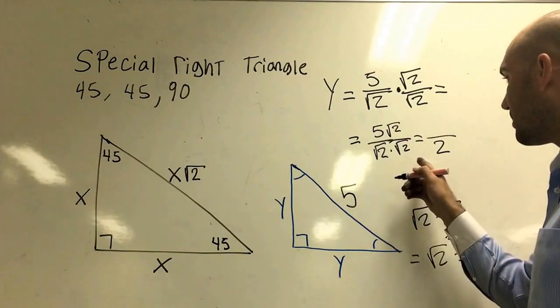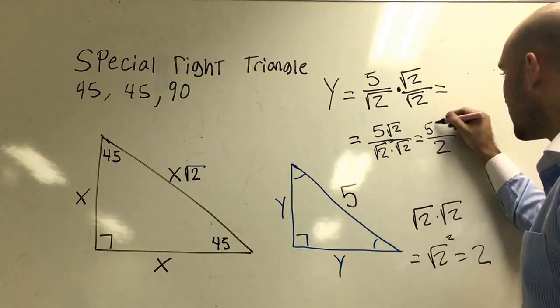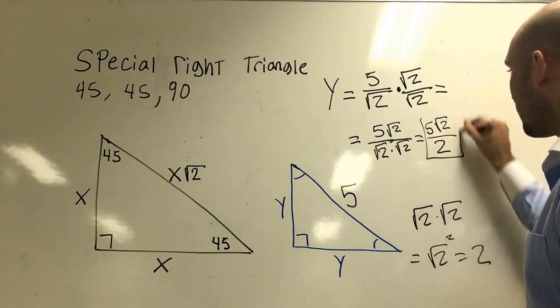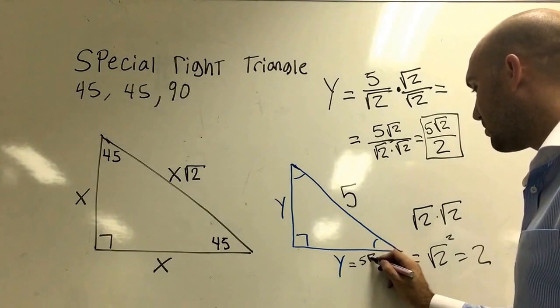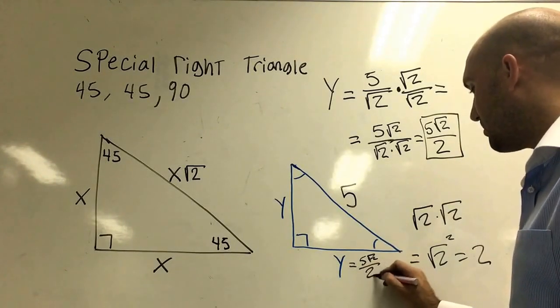Okay, but back up here, we know that 5 square root 2 remains the same. And this is our final answer for what y equals. It equals 5 square root 2 all divided by 2.